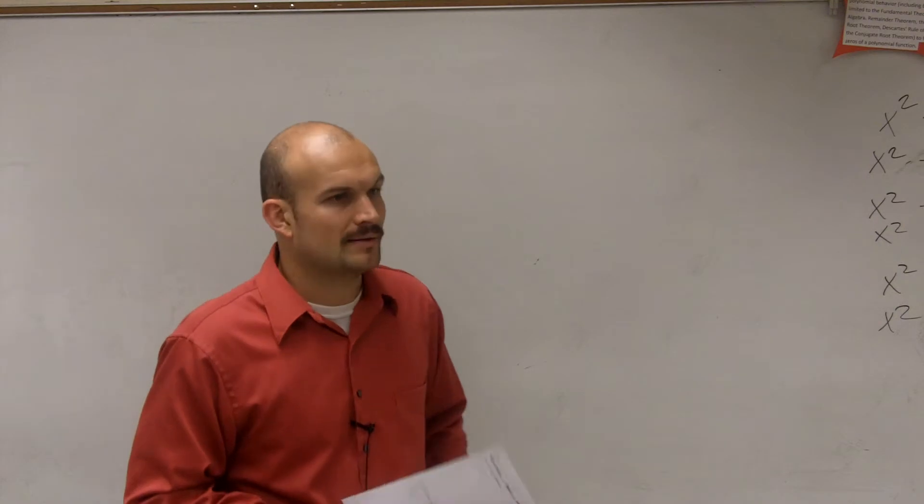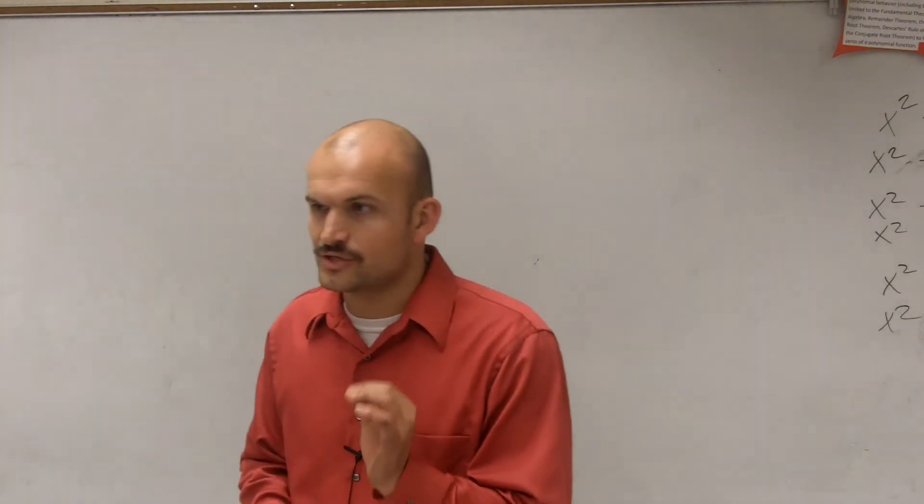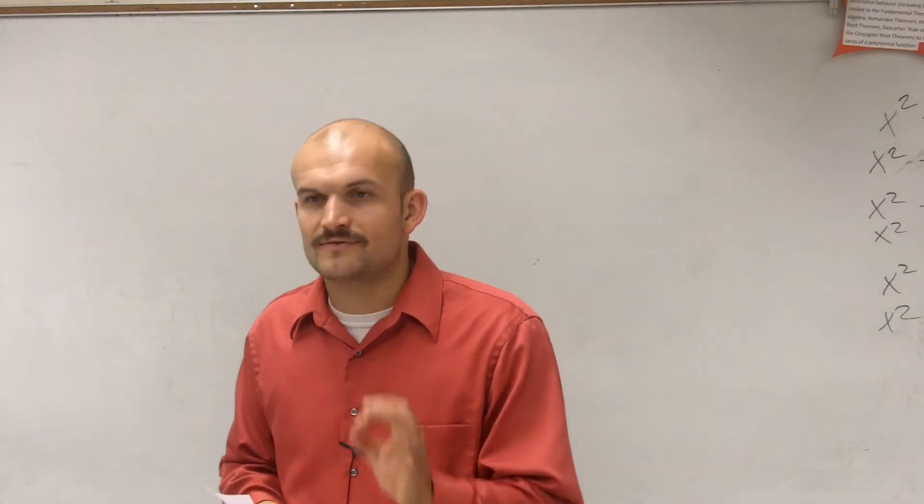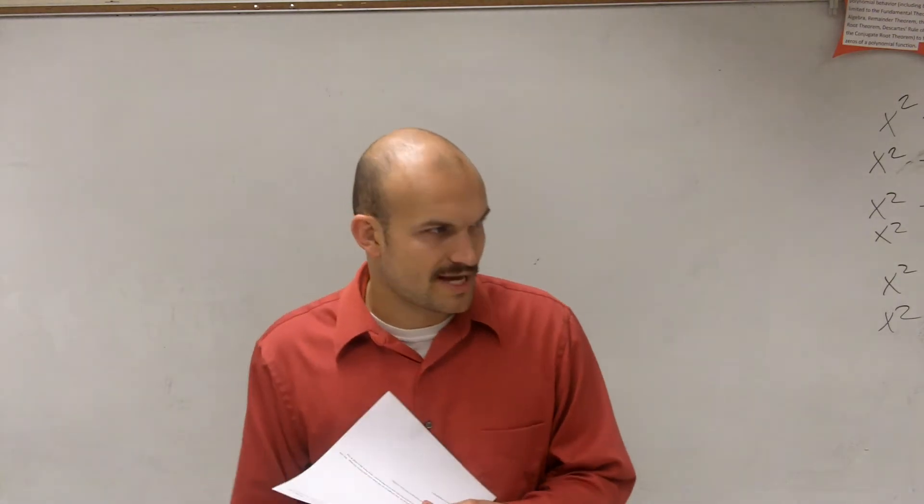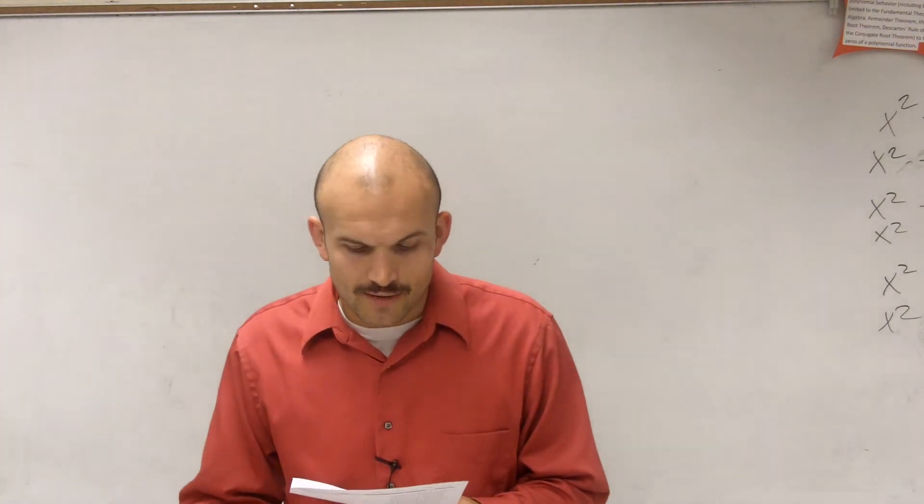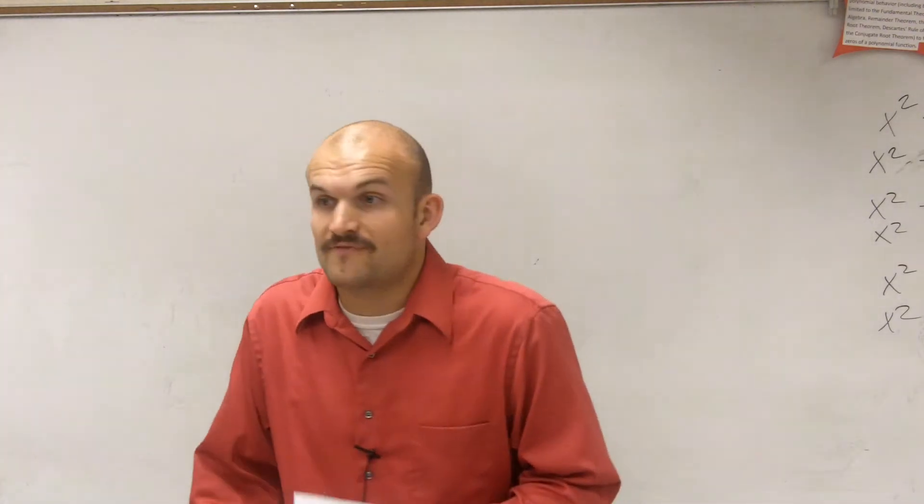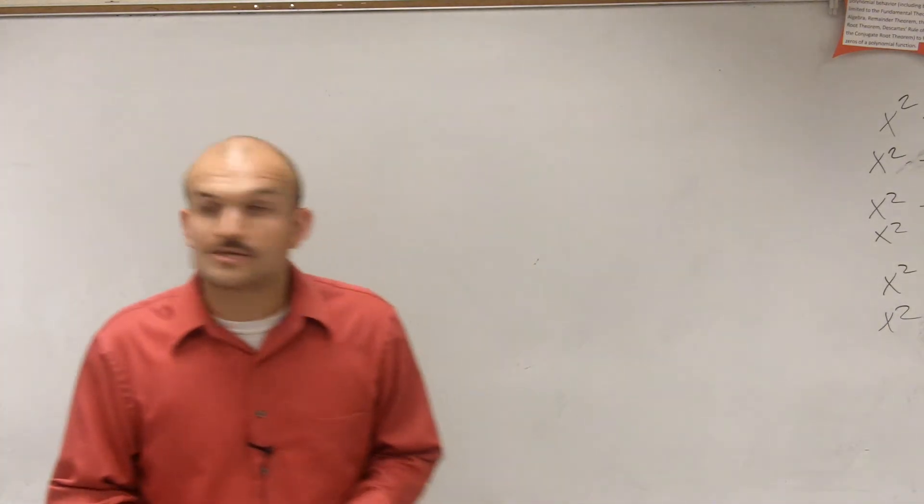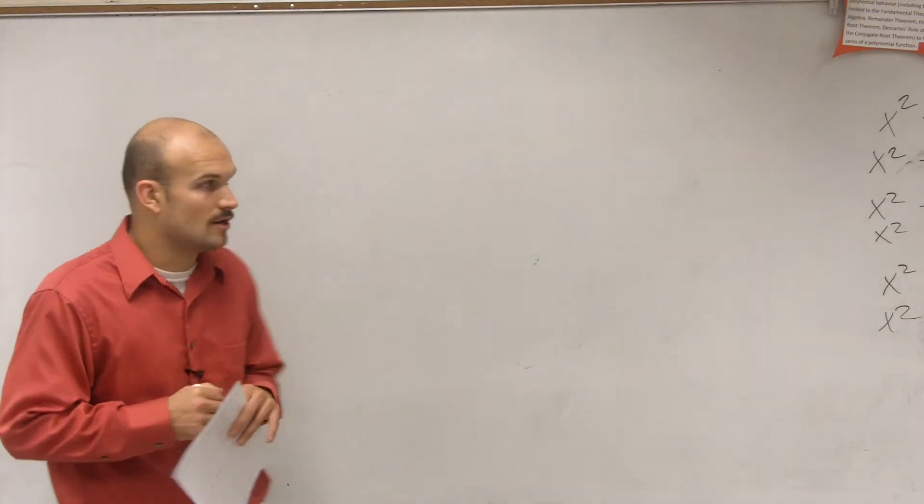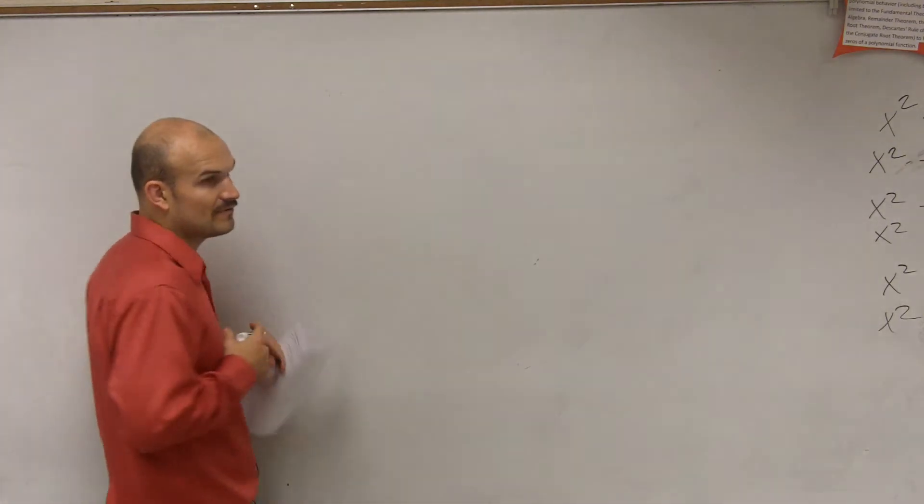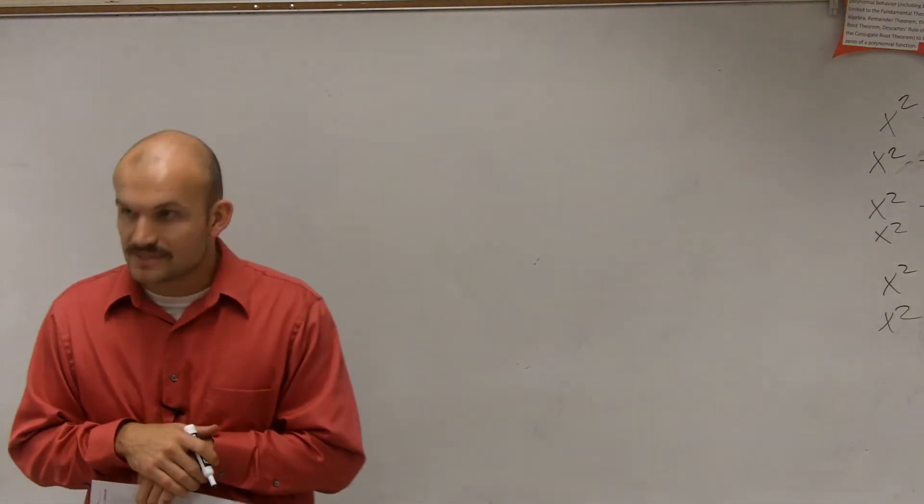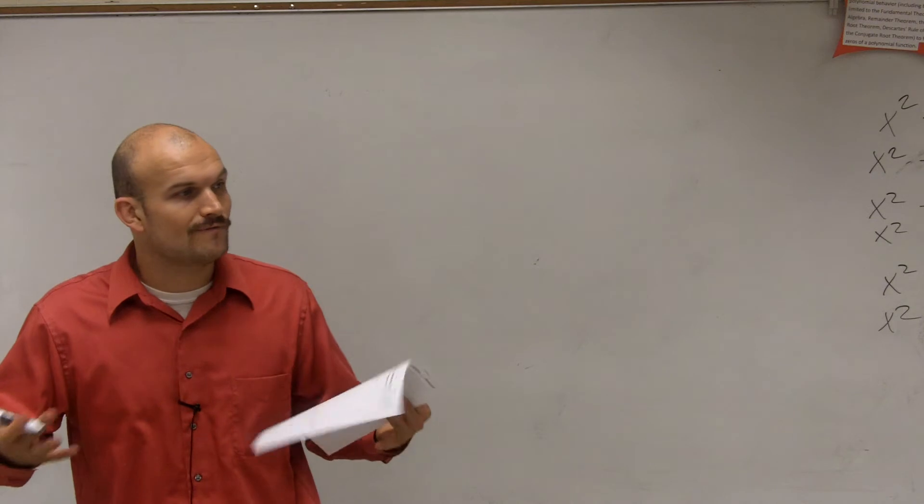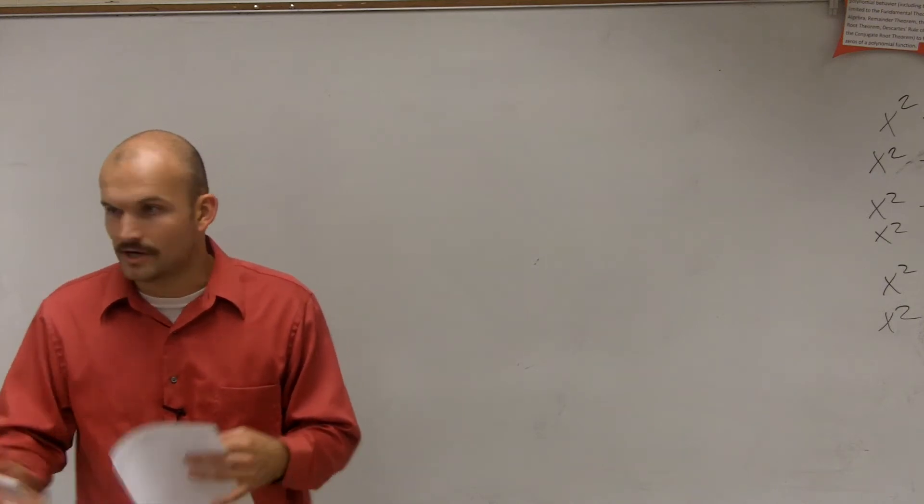When you have a word problem, there's a very important thing you need to do. You need to first figure out what the question is asking. They're asking, find the two numbers. So we need to find the value of two numbers. The next thing we look at is what is it we don't know? We don't know the value of the first number, and we don't know the value of the second number. So when we don't know values of something, we assign them variables.